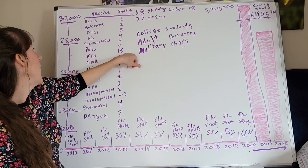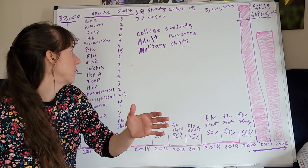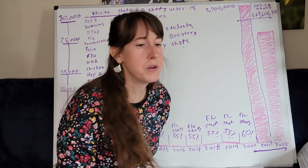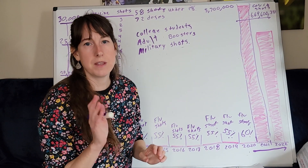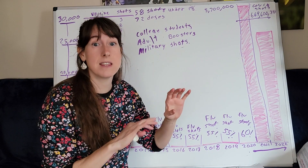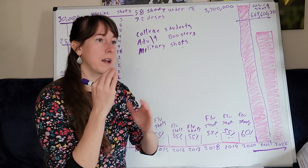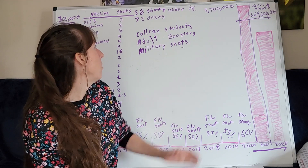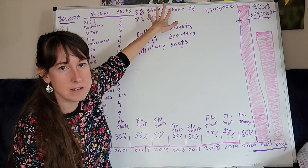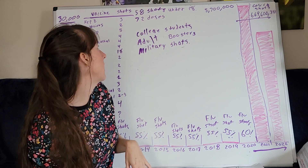So that's the CDC childhood schedule. You can go on the CDC website and look up the childhood vaccine schedule to see the details. This is for under 18 — it's about 58 shots that you would get if you followed the CDC schedule, which winds up being 72 doses.